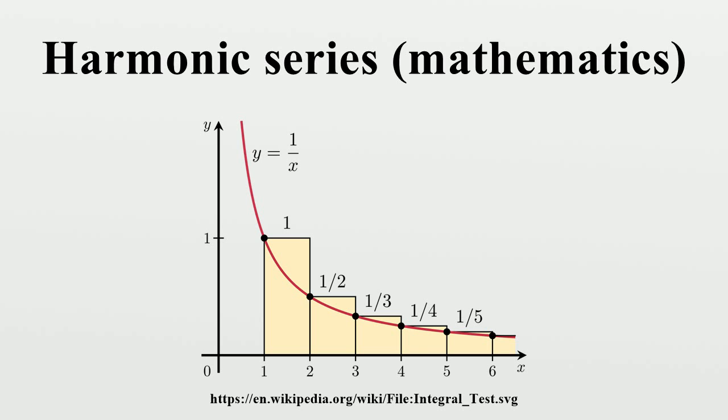It is possible to prove that the harmonic series diverges by comparing its sum with an improper integral. Specifically, consider the arrangement of rectangles shown in the figure to the right. Each rectangle is one unit wide and 1/n units high, so the total area of the rectangles is the sum of the harmonic series.